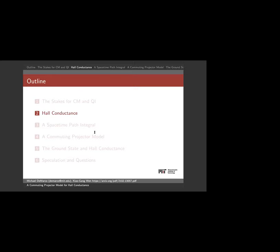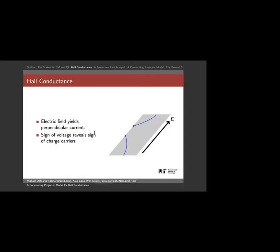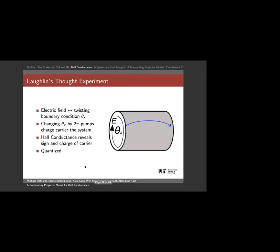Now let's jump to Hall conductance. I want to focus on the relationship between the geometry of the wave function — in a high-dimensional sense — and what makes Hall conductance quantized. Hall conductance is this weird thing that happens in certain materials: you apply an electric field and the current goes orthogonal to it — perpendicular. In 2D systems at high magnetic fields this conductance is quantized.